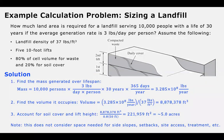In step one, finding the mass generated over the lifespan: we take 10,000 people — our design population — multiplied by three pounds per person per day, multiplied by 30 years, by 365 days per year. That gives us 3.285 times 10 to the eighth pounds — that's the total mass of waste produced over the 30-year lifespan.